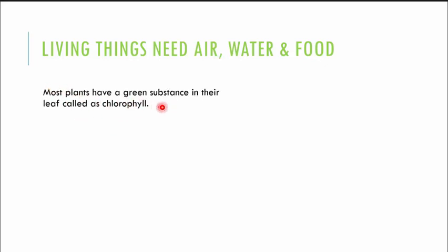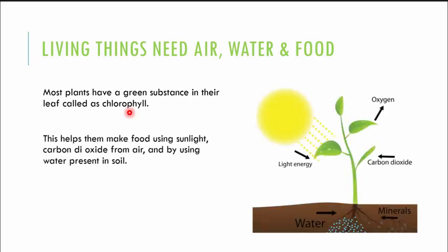Most plants have a green substance in them called chlorophyll. You should remember that plants are green in colour because of a substance called chlorophyll. This chlorophyll is helping them make food using sunlight, carbon dioxide from the air, and water that is present in soil.